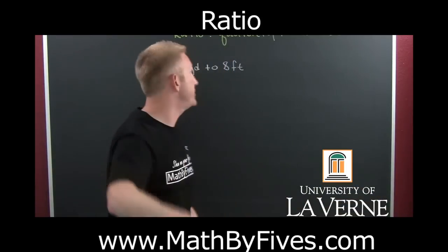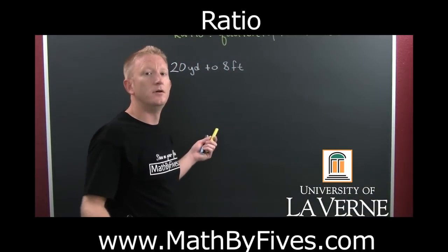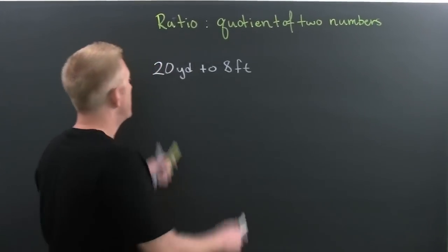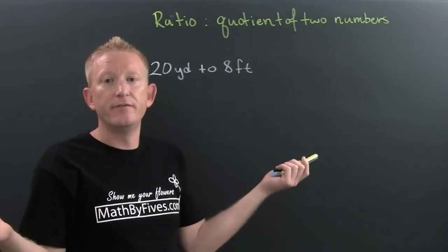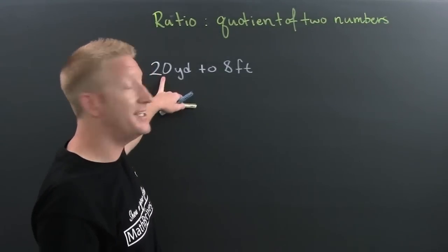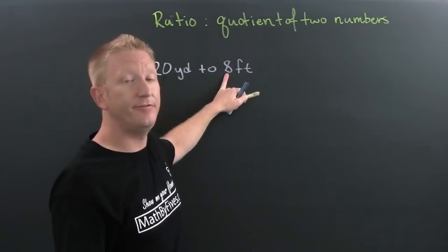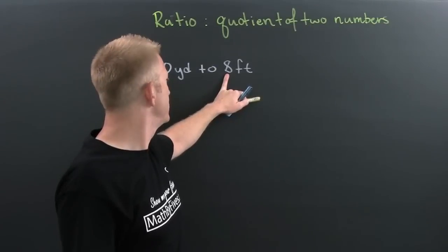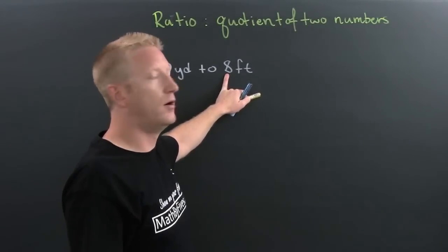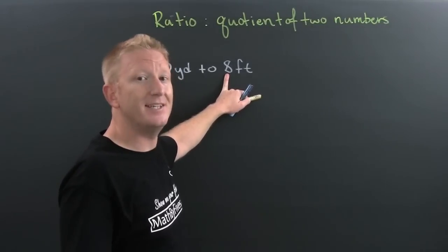What's a ratio? A ratio is the quotient of two numbers. We need to get those numbers in the same units. We have 20 yards to 8 feet, so we need to convert one of them. I probably want to convert the yards into feet to get whole numbers. If I convert 8 feet into yards I'd have to divide by three, and then — fraction action — everybody's scared of fractions.